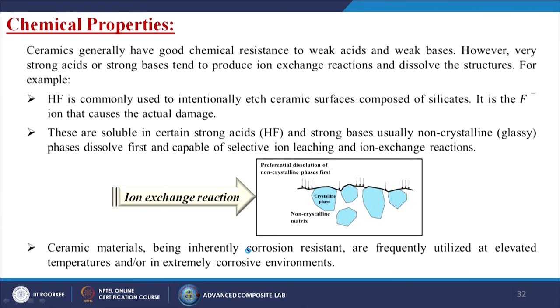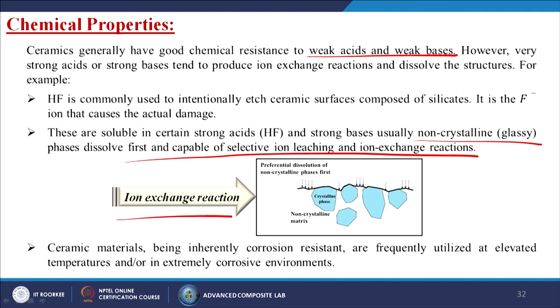Ceramics generally have good chemical resistance to weak acids and weak bases. However, very strong acids or bases tend to produce ion exchange reactions and dissolve the structure. For example, HF is commonly used to intentionally etch ceramic surfaces composed of silicates, with the F⁻ ion causing the actual damage. Non-crystalline glassy phases dissolve fast and are capable of selective ion leaching and ion exchange reactions; ceramic materials are thus frequently utilised at elevated temperatures and in extremely corrosive environments.